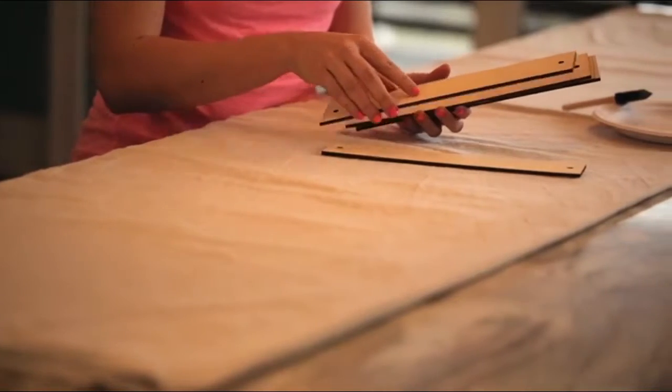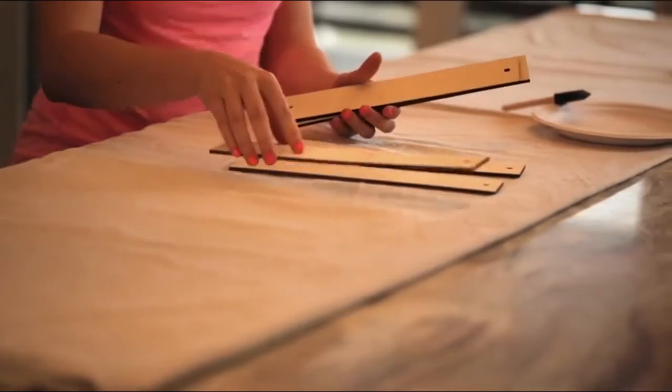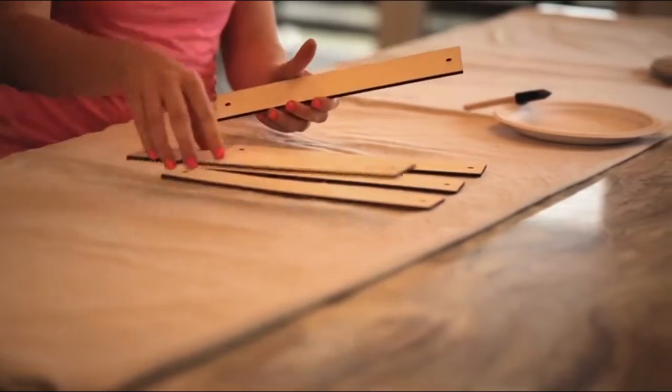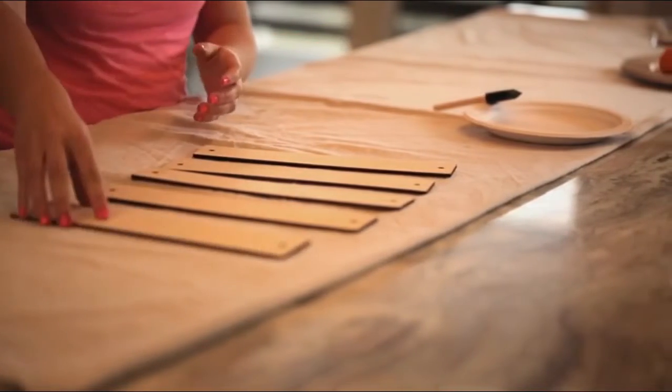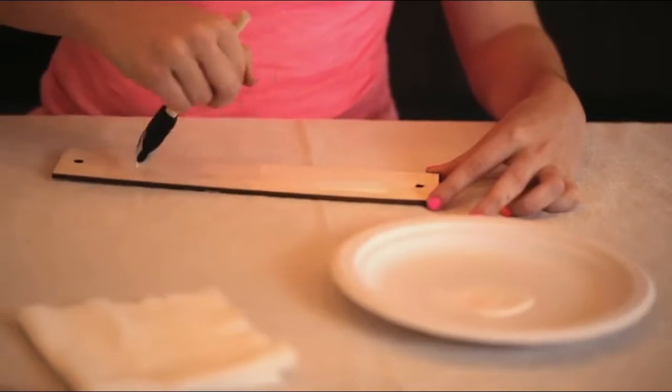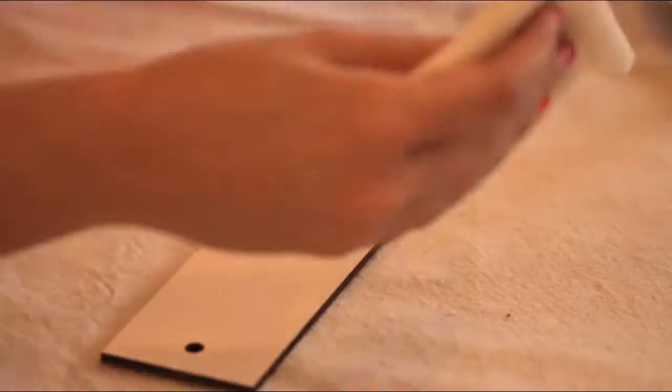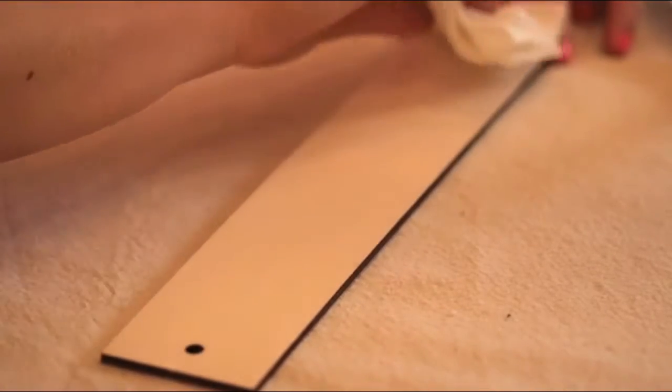Decide how you want to paint your dream board. You can paint it in a solid color, ombre colors, or even try a wash technique for a more distressed look. To create a wash effect, paint the wood boards and immediately wipe the paint off with a damp paper towel.